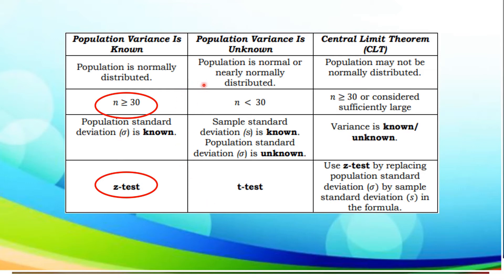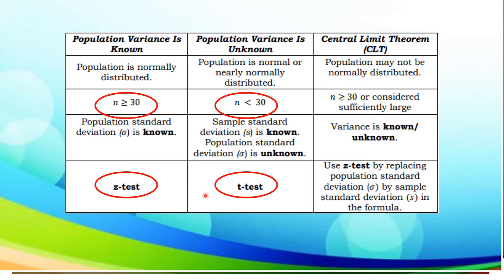On our next column, the population is described to be normal or nearly normally distributed. The sample is less than 30. Here, there are two things you should consider: the sample standard deviation is known or the population standard deviation is unknown. In this case, you are going to apply z-test. Remember, the sample is less than 30 and the sample standard deviation can be known or the population standard deviation is unknown — we are going to use z-test.